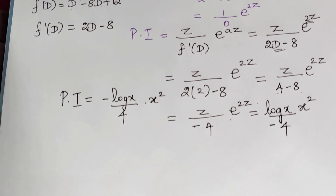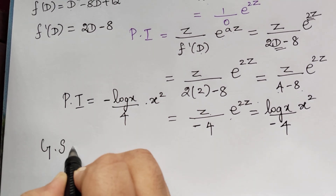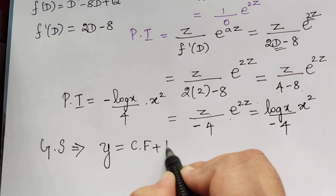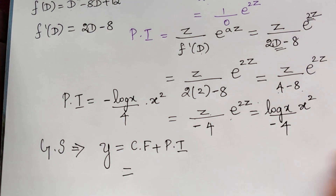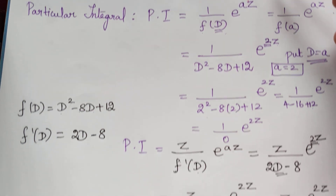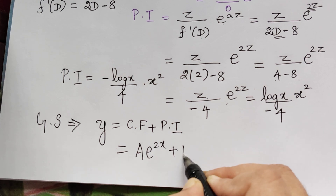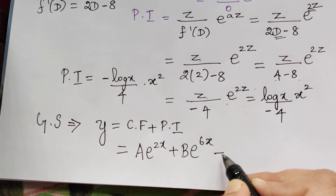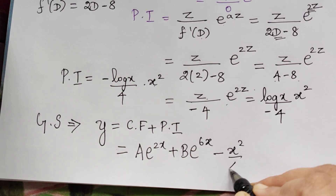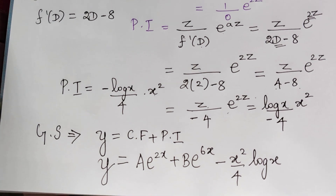Now we substitute the complementary function and the particular integral to find the general solution. The general solution is y equals complementary function plus particular integral: y = a·e^(2z) + b·e^(6z) minus x²/4·log x.